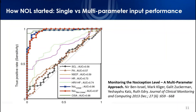Here are the results of that analysis. Each individual parameter is shown on the right: SCL is skin conductance, PA is pleth amplitude, and those individually didn't do a good job predicting noxious versus non-noxious stimuli. Heart rate did a better job, and heart rate variability did slightly better still. There are monitors that use some of these parameters individually, but the multi-parameter combination — the aggregate NOL index — did a really good job.